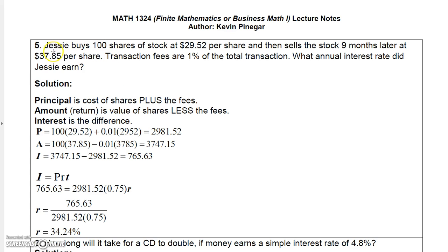Okay, I'm going to finish on this problem and then you can do the last one on your own. This one is a little bit tricky because you're going to buy 100 shares at $29.52 a share, but you have to pay a transaction fee of 1% of the total transaction. So basically, the principal that you invest is 100 times $29.52, which is $2,952. But you've got to pay a 1% fee on top of that. So that's going to add up to $2,981.52.